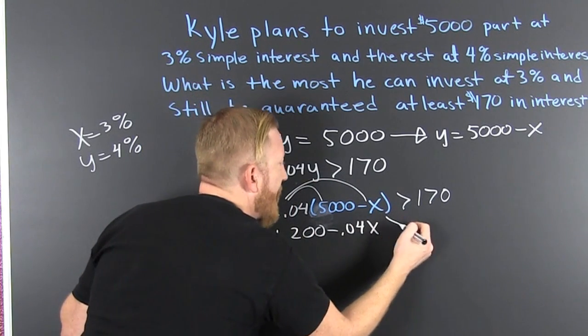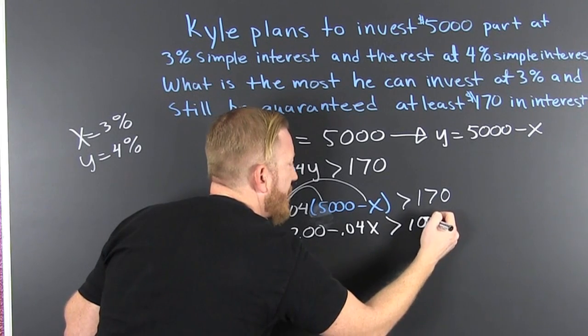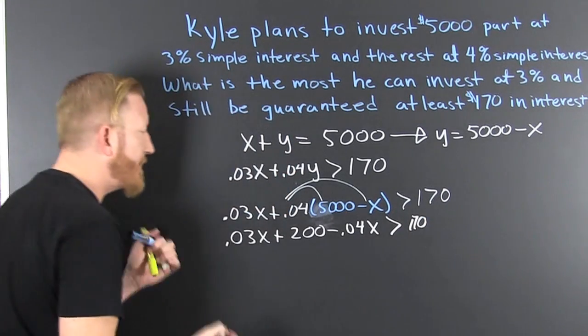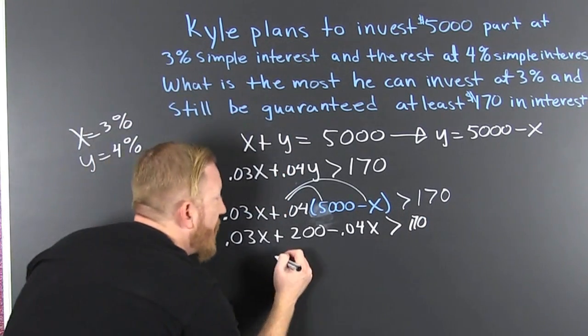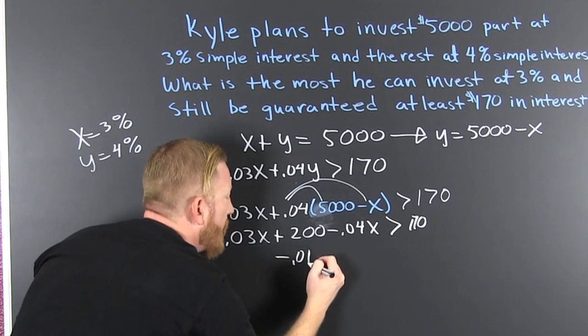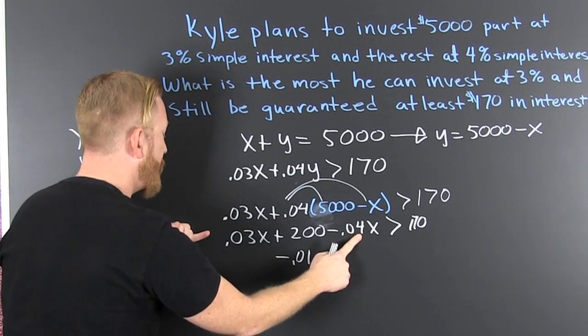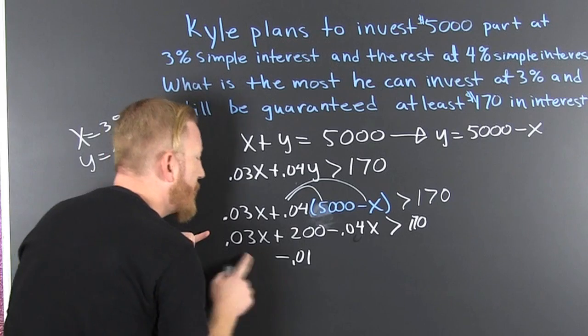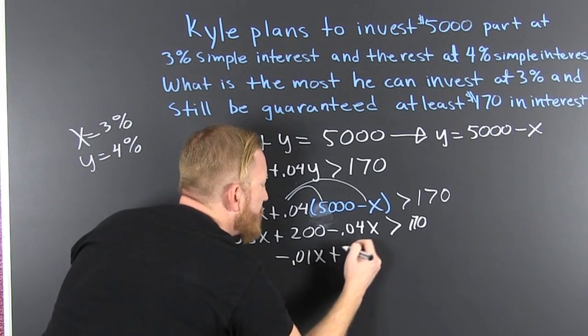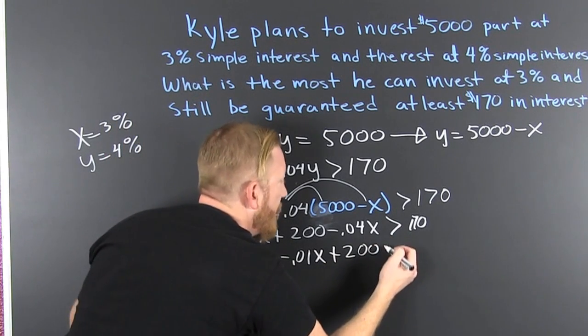So then we gather, collect, and combine, and we find -0.01 when we subtract the 0.04 from the 0.03X + 200. That needs to be bigger than 170.